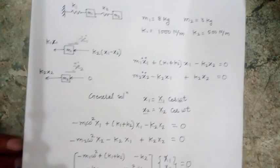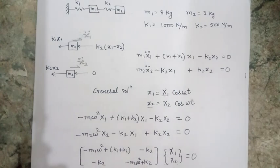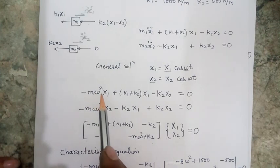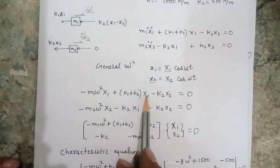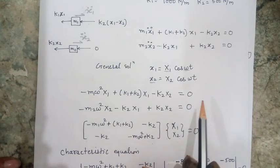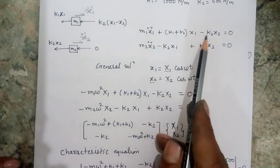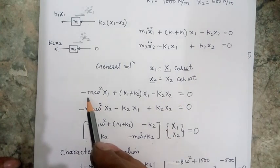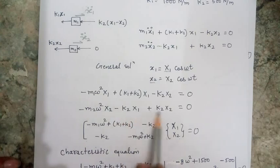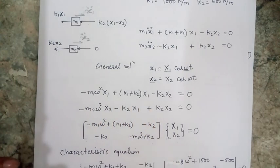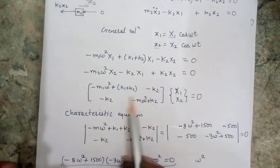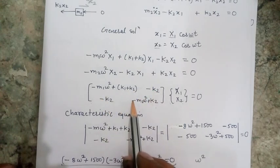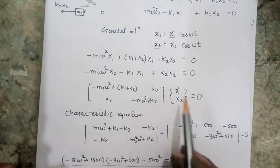When I put this general solution into the governing equations, the equations simplify: −m1*ω²*X1 + (k1 + k2)*X1 − k2*X2 = 0, because when I substitute the x values, the cos(ωt) term is eliminated. Similarly for the second equation. When I rearrange all terms, I get a matrix form: the first term is (−m1*ω² + k1 + k2), −k2; and (−k2), (−m2*ω² + k2).